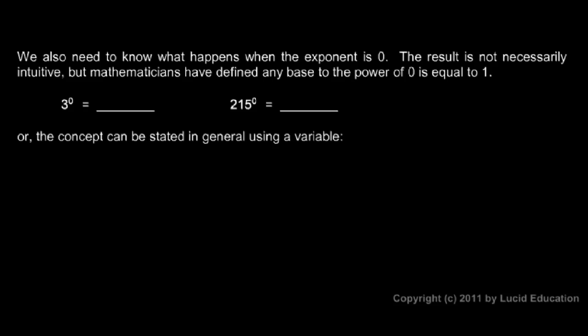Now let's talk about what happens when the exponent is 0. Like you see here, 3 to the power of 0 or 215 to the power of 0. It turns out that anything raised to the power of 0 is simply 1. So 3 to the power of 0 is 1 and 215 to the power of 0 is 1. That's how mathematicians define a 0 exponent or the result of raising something to a power of 0.